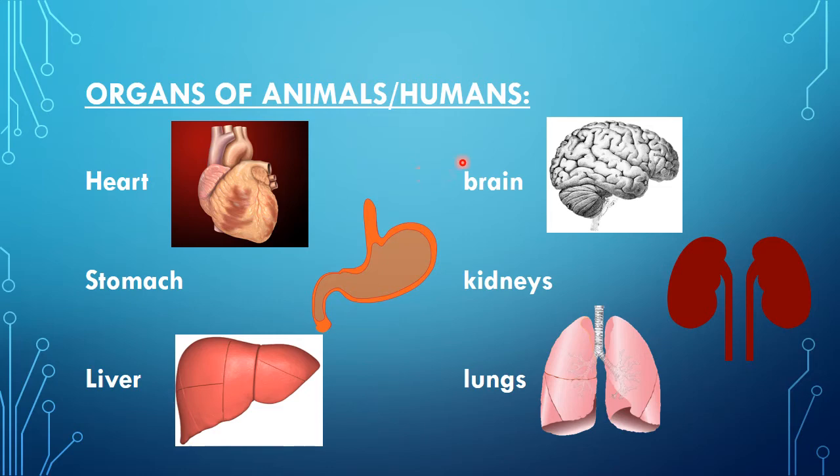Brain is the controlling center of our body. It controls all the activities which are performed in our body. Panji body je andar jeka bhi functions theen tha, uae sab hi brain je control mein da hain.